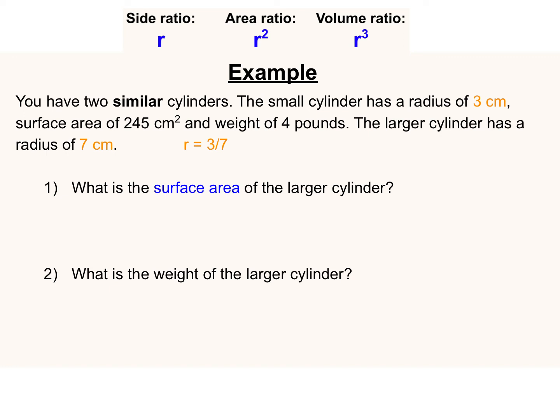So in question one, if we're trying to find the surface area, we need to square that side or length ratio to find the area ratio. Because, of course, surface area is a two-dimensional representation of area. So I square 3 sevenths, I get 9 over 49.